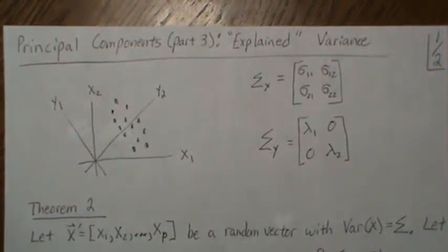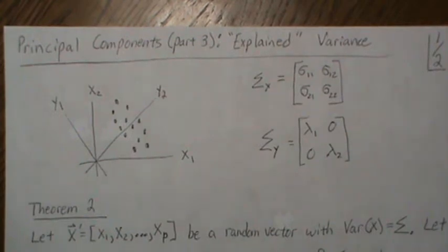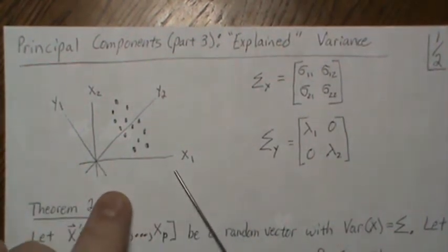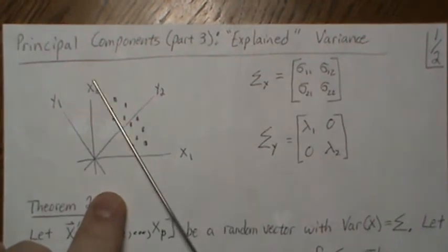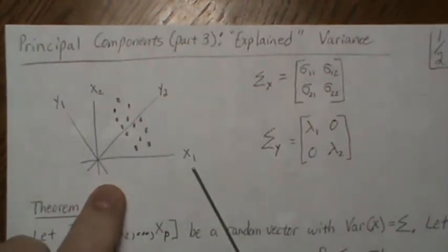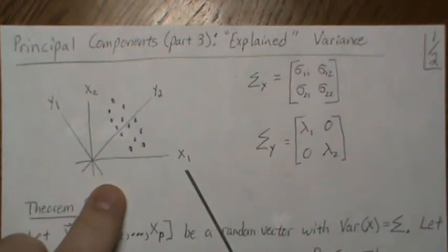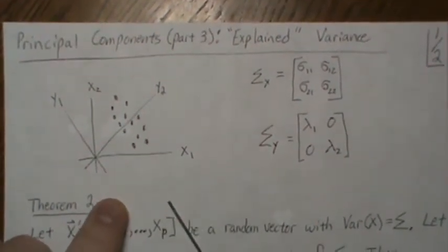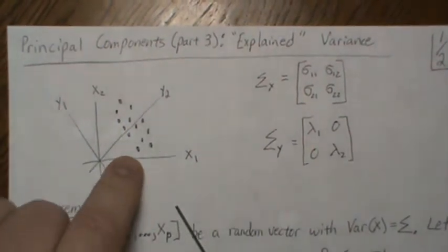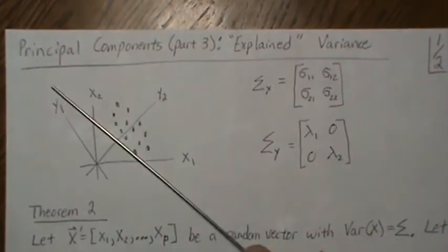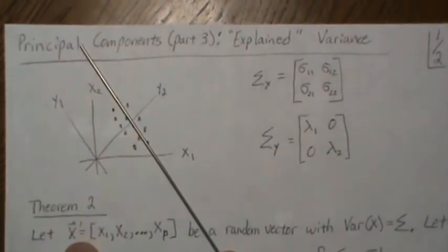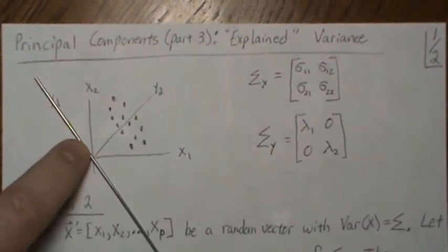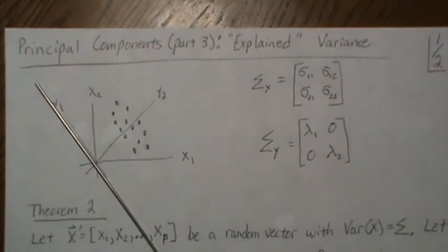Hello, in this video I'm going to call it Part 3: Principal Components, Explained Variance. As a quick reminder, here we have variables x1, x2 with some covariance matrix and the variance associated with it. If we were to plot the data, it looks like this. In some direction there's maximum variance associated with the data, and that direction becomes the first principal component. Parts 1 and 2 describe that process.